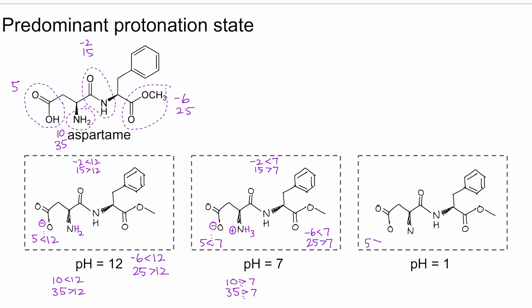For pH of 1, 5 is greater than 1. So we have a protonated carboxylic acid. For amine, 10 and 35 are both greater than 1. So we protonate the amine and give nitrogen a plus charge. For amide, negative 2 is less than 1, while 15 is greater than 1. So we leave that amide as its neutral state. And then for ester, negative 6 is less than 1, and 25 is greater than 1. So we also leave that ester in its neutral state. And there we have it.